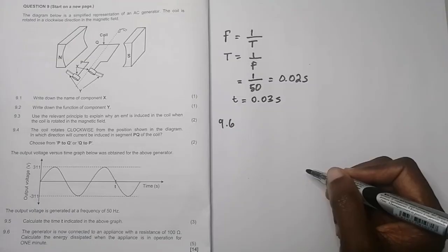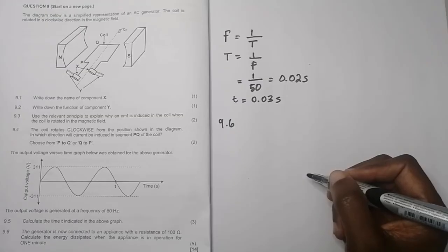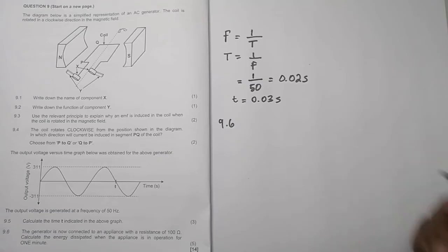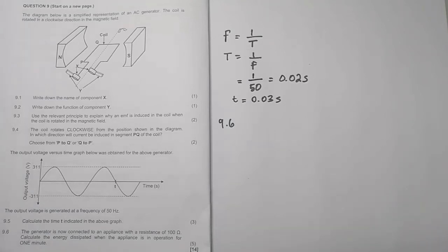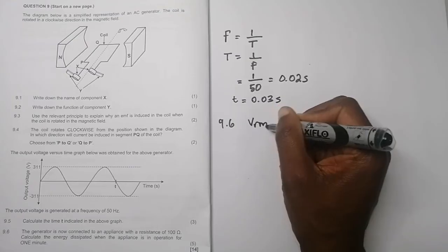The next question - they say the generator is now connected to an appliance with a resistance of 100 ohms. They say calculate the energy dissipated when the appliance is in operation for one minute. So let's first of all find out, let's get a power rating. So in this case we know that the maximum voltage is 311, but what do we need to use? We need our RMS voltage to calculate the average power.